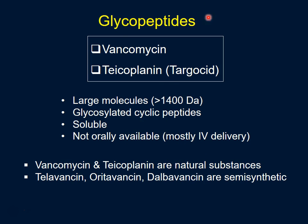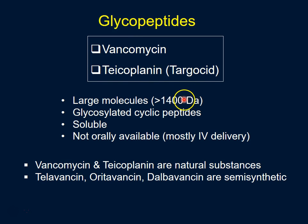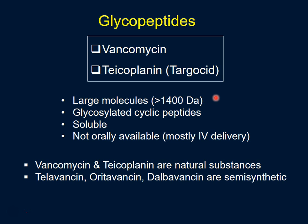As the names suggest, glycopeptides are peptides that contain sugars attached to them. These are very large molecules — on average more than 1400 daltons. That size means they have a very difficult time getting through porins, and therefore cannot enter gram-negative bacteria. So predictably, their coverage is restricted to gram-positive bacteria.